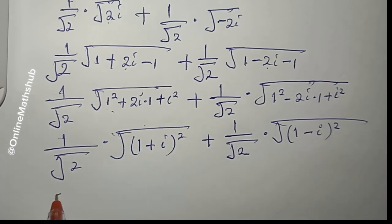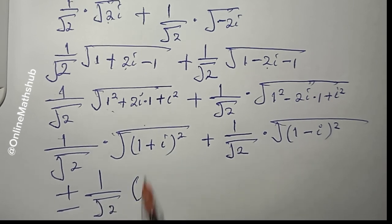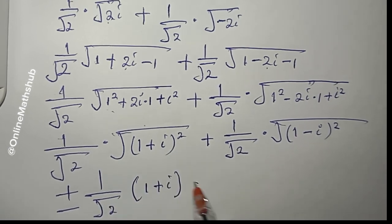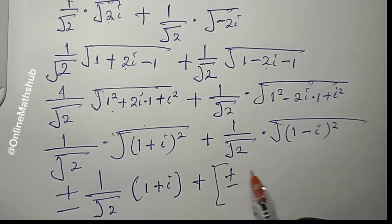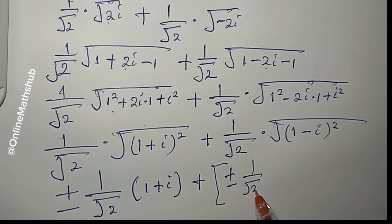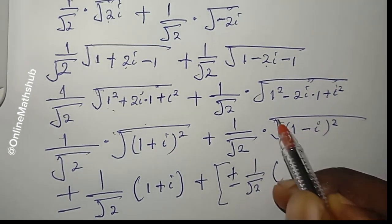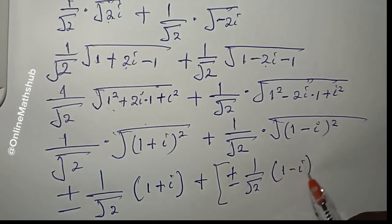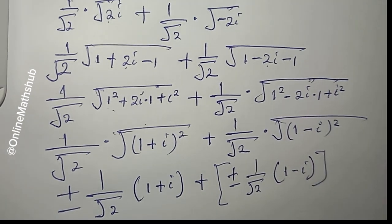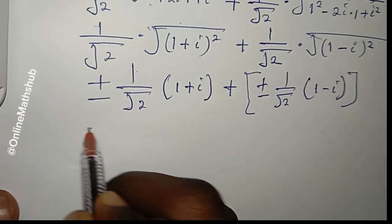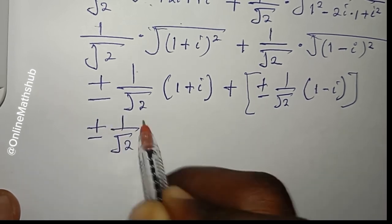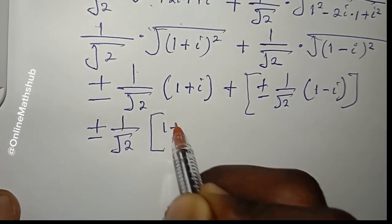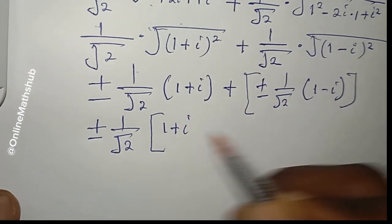The square root cancels the square, so I'm left with ±(1/√2)(1 + i) on the first side, and ±(1/√2)(1 - i) on the second side. The factor 1/√2 is common to both, so I factor it out: ±(1/√2) times [(1 + i) + (1 - i)].